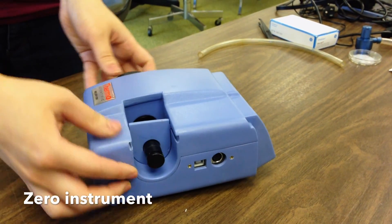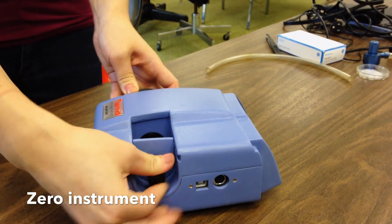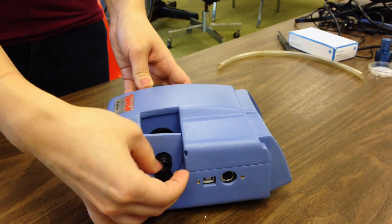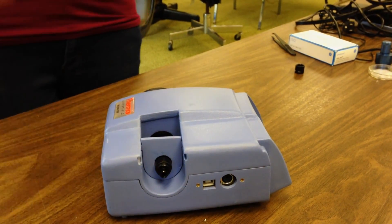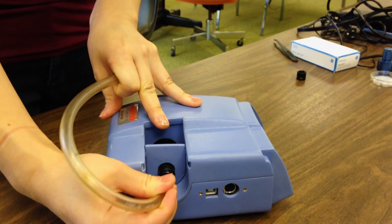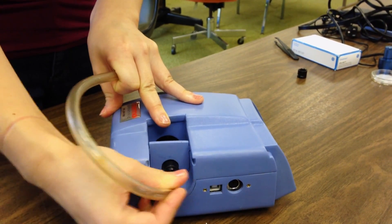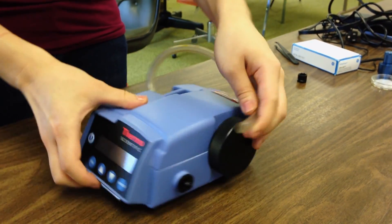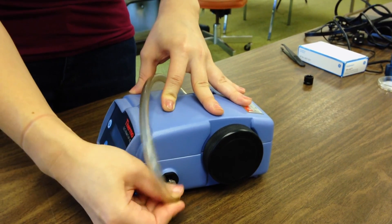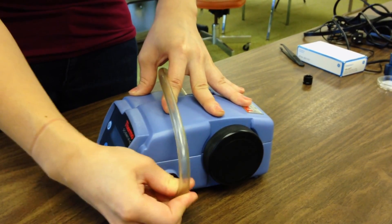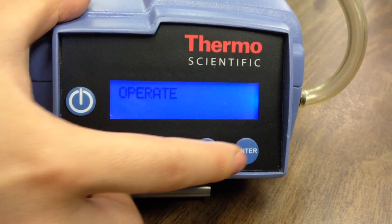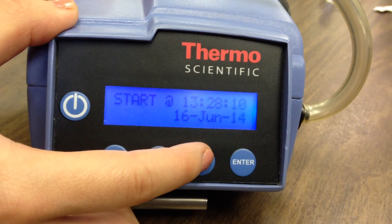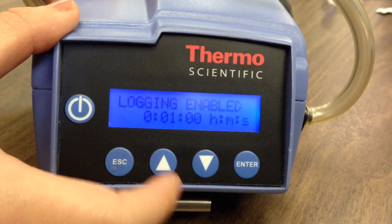In order to calibrate your PDR, unscrew the cap of your black total inlet piece. Connect one end of your tubing to the total inlet and then connect the other end to the total outlet of the PDR. From the OPERATE menu, press the ENTER key and then scroll down to the zero instrument screen. Then press ENTER to begin zeroing the instrument.